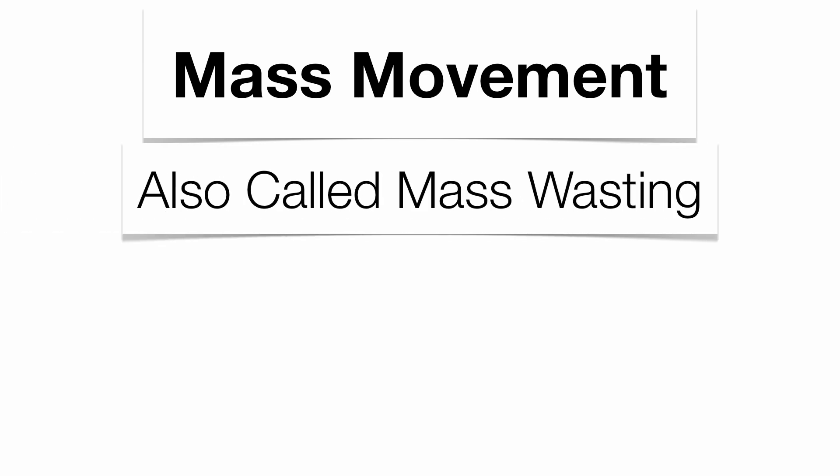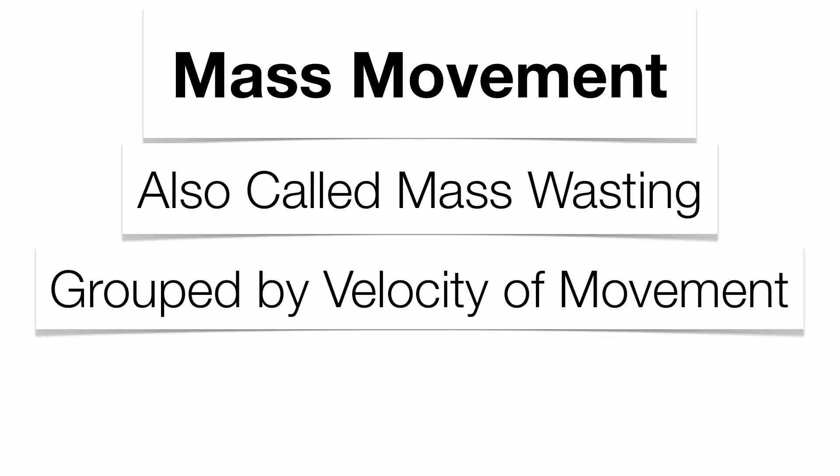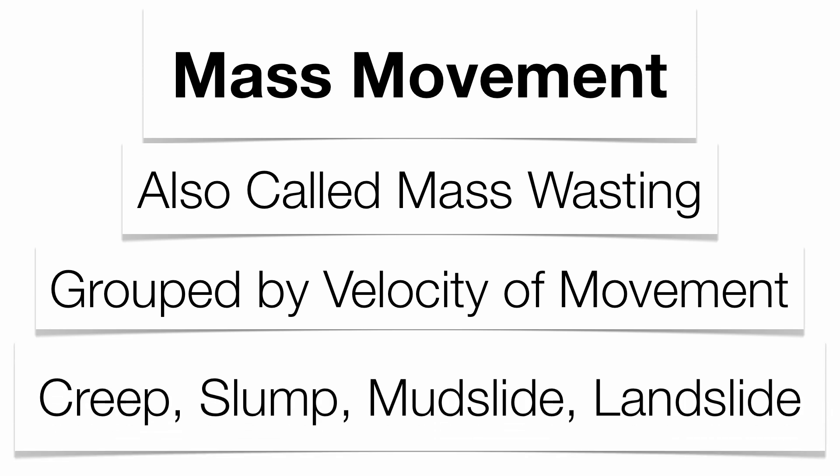All four types that we're going to talk about are categorized by the velocity of movement with the soil. We're going to talk about creep, slumps, mudslides, and landslides.